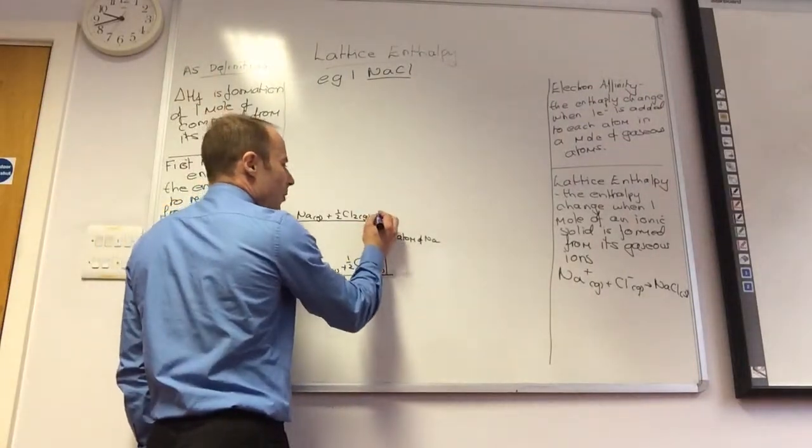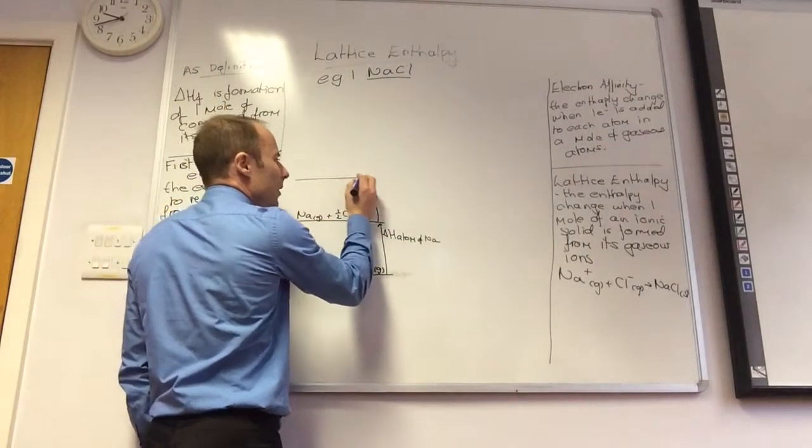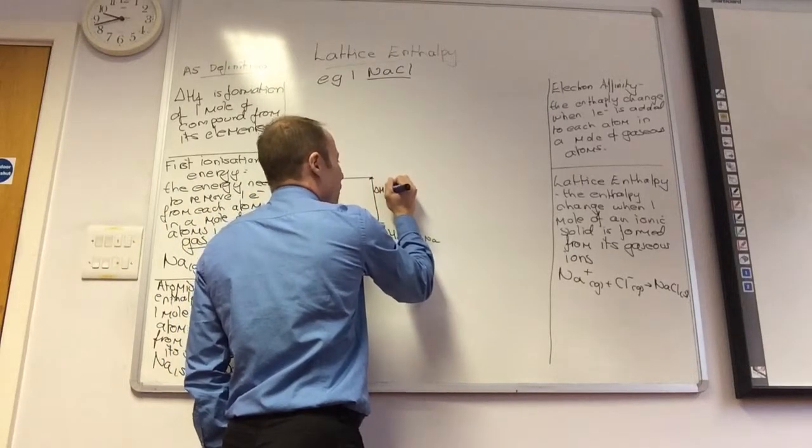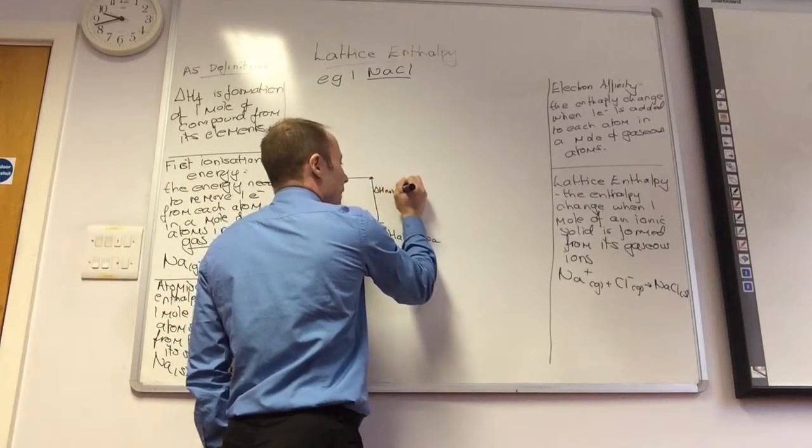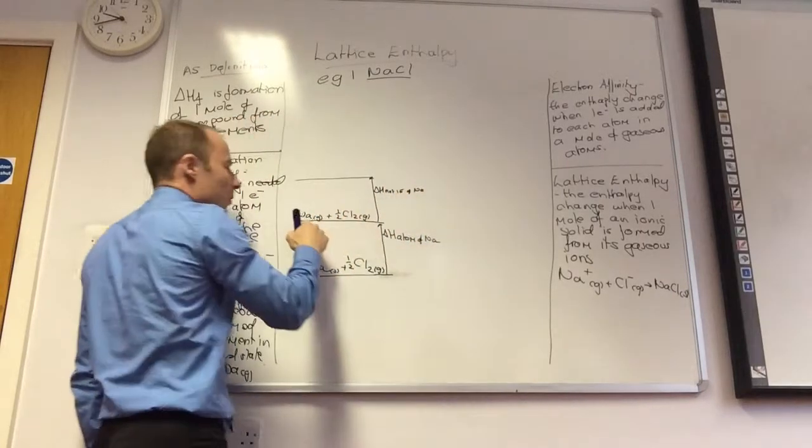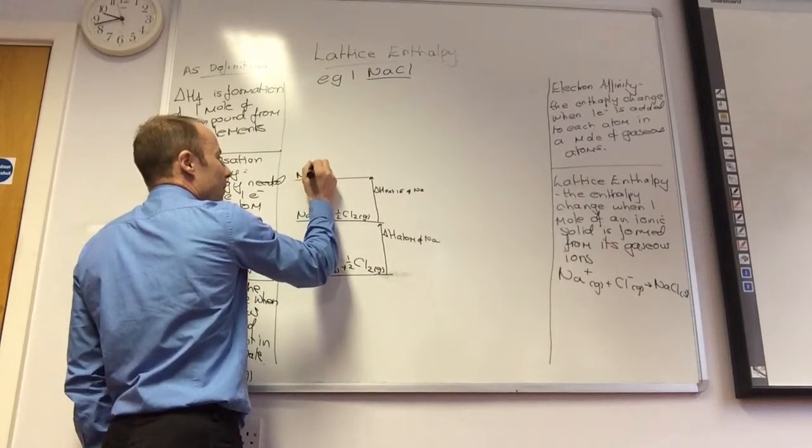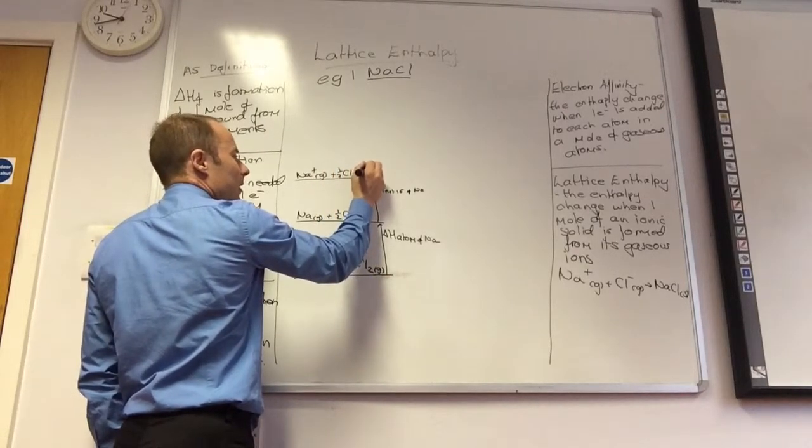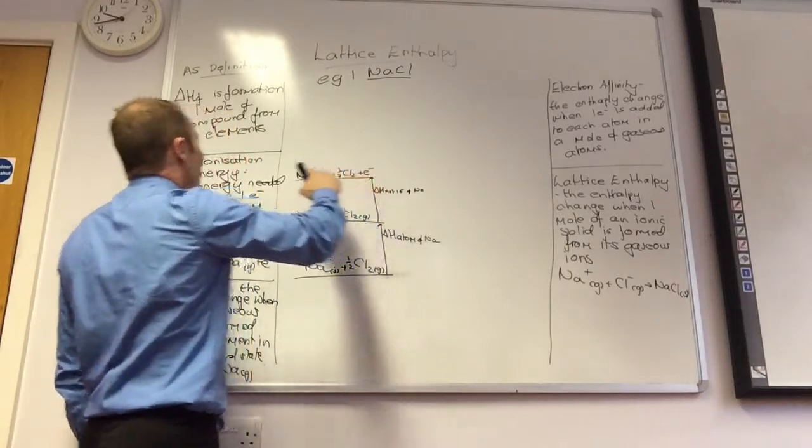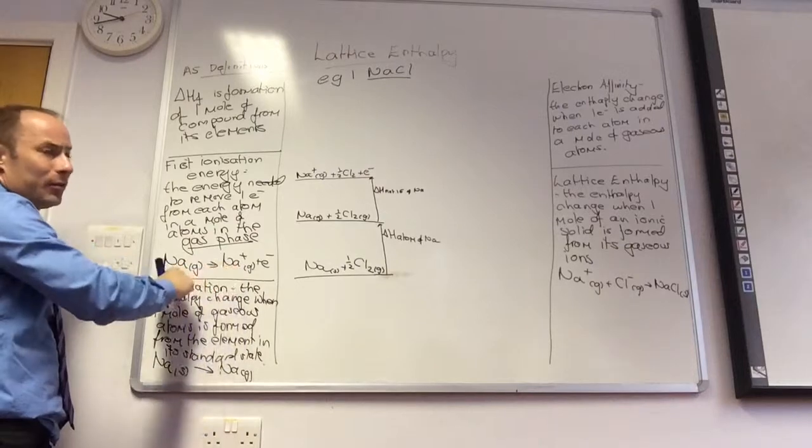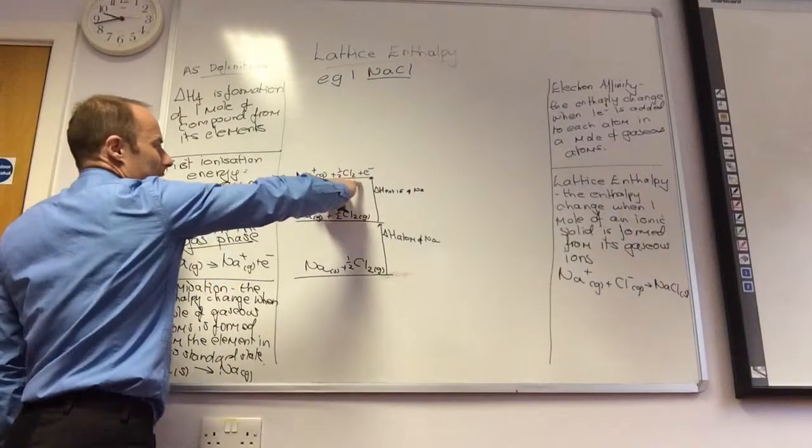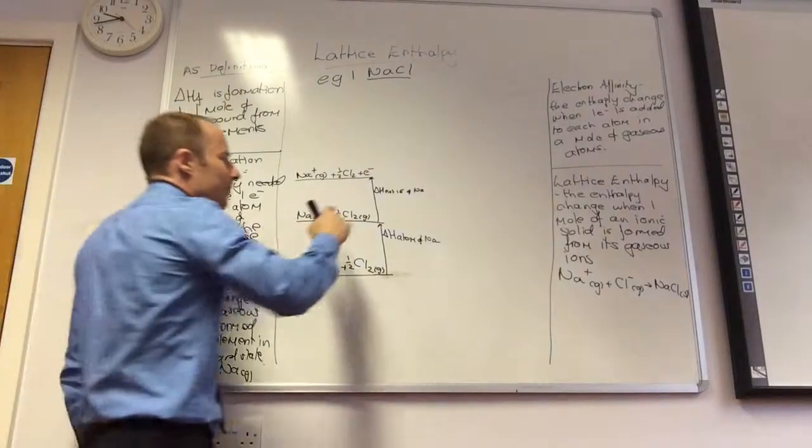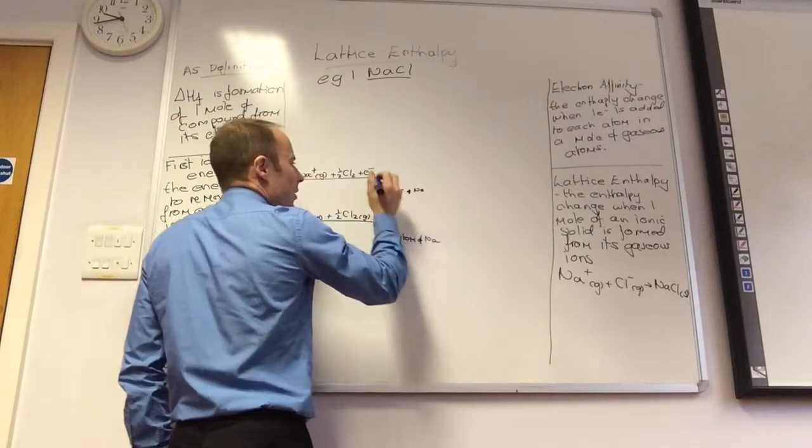So I've atomized sodium. I'm now going to carry on with sodium. I need to now ionize sodium. So this is going to be delta H first ionization energy of Na. So I've now gone from sodium gas to Na plus gas, plus a half Cl2, plus an electron, because I've removed the electron there. I have done this bit here. I've gone from Na to Na plus gas, plus an electron. So delta H first ionization energy of sodium.